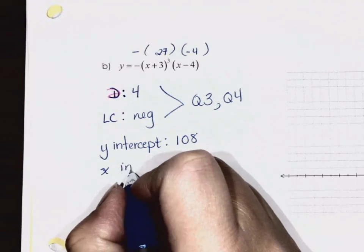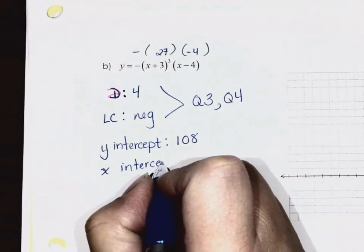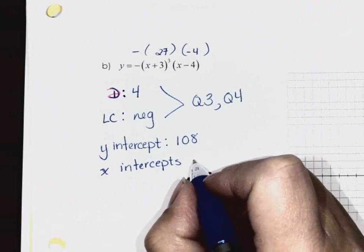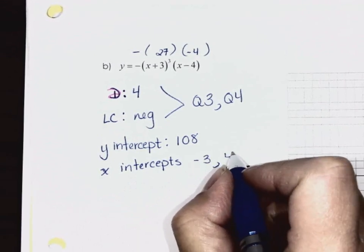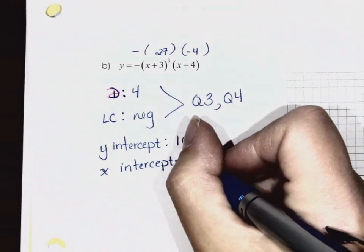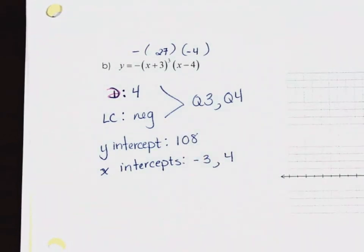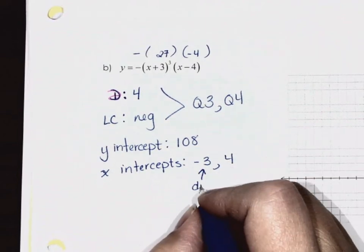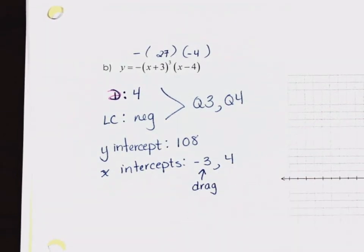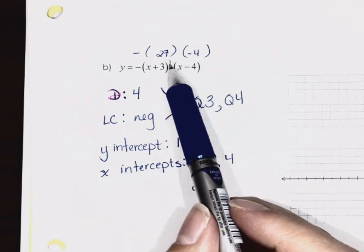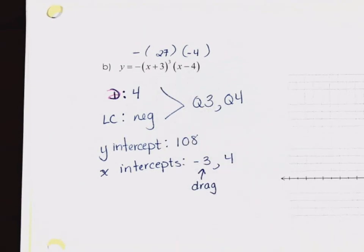X-intercepts are negative 3 and positive 4. What do we know about the negative 3 x-intercept? We've got a drag. I like to write that in to remind myself — it's so easy to miss. If I don't make a note, I'll just do straight cuts and won't get full marks. So x = −3 is a drag, x = 4 is a cut.